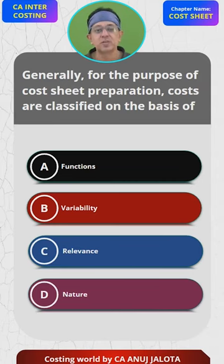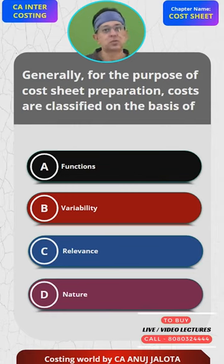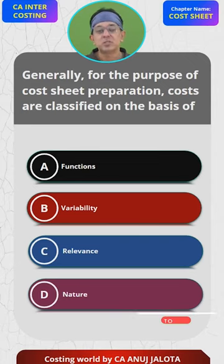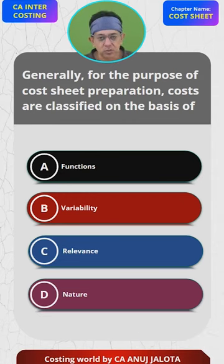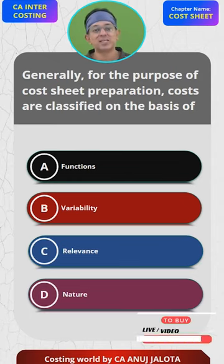So how do we classify the cost? We classify them based upon functions. Functions means — for material, there is a certain department responsible for controlling material cost. For labor, there is a certain responsibility center that controls the labor cost. All these are called different functions. An organization is comprised of various functions — to make a product, you require material, labor, direct expenses, factory overheads, administration, and S&D. These are all various functions in an organization.